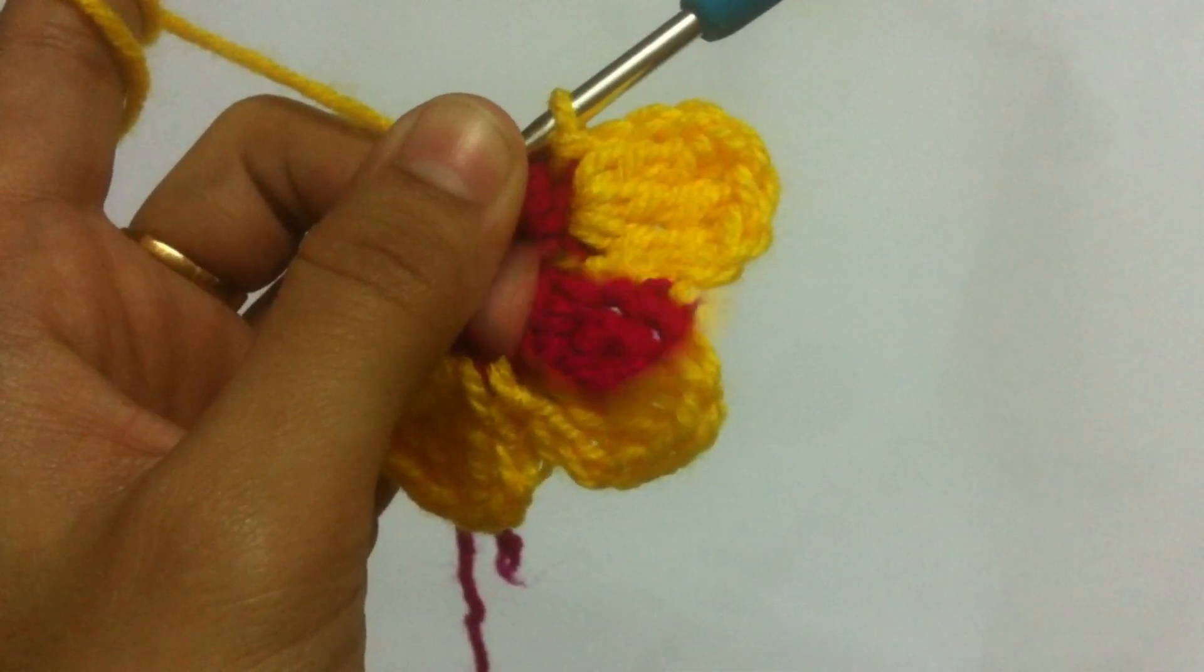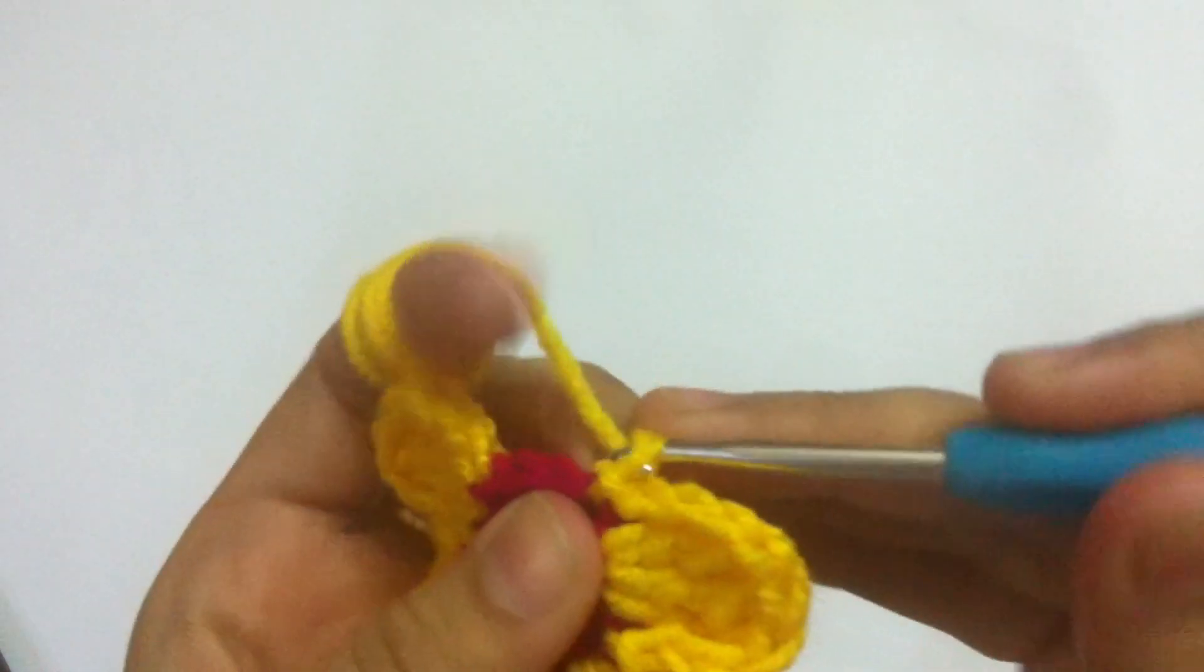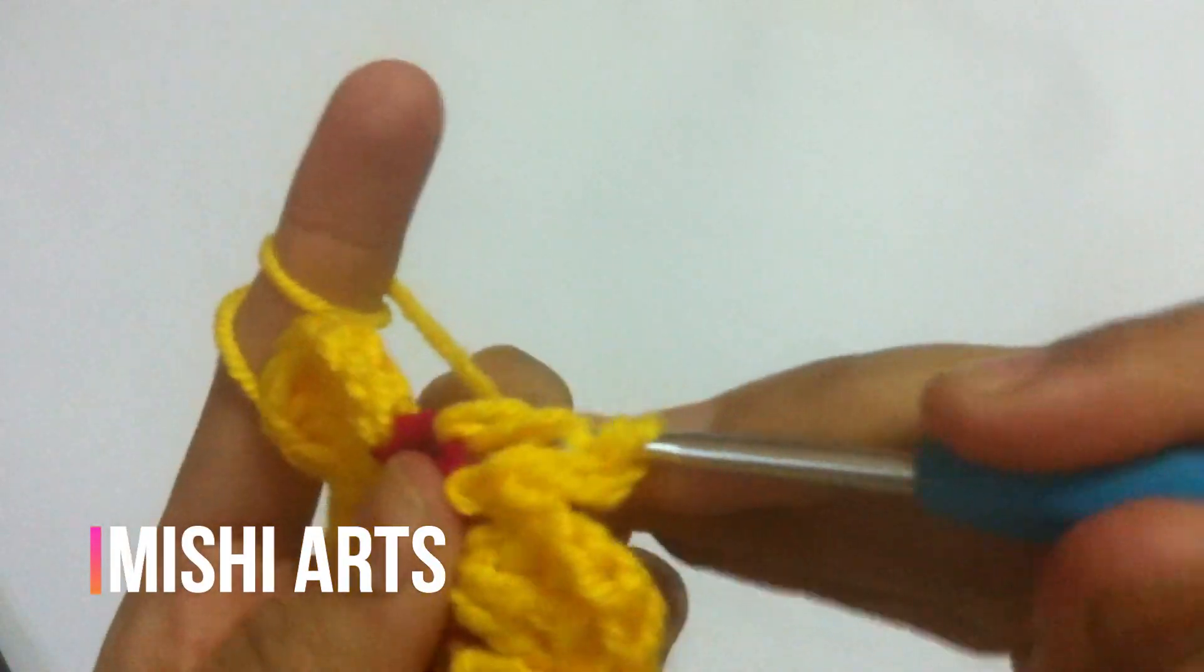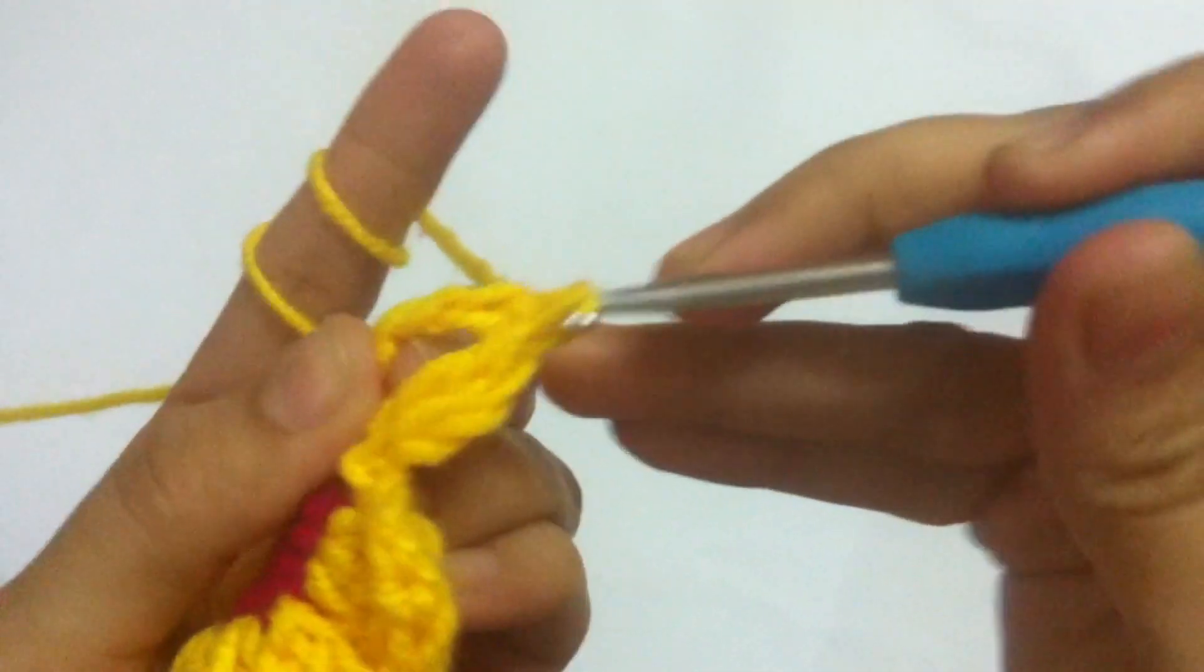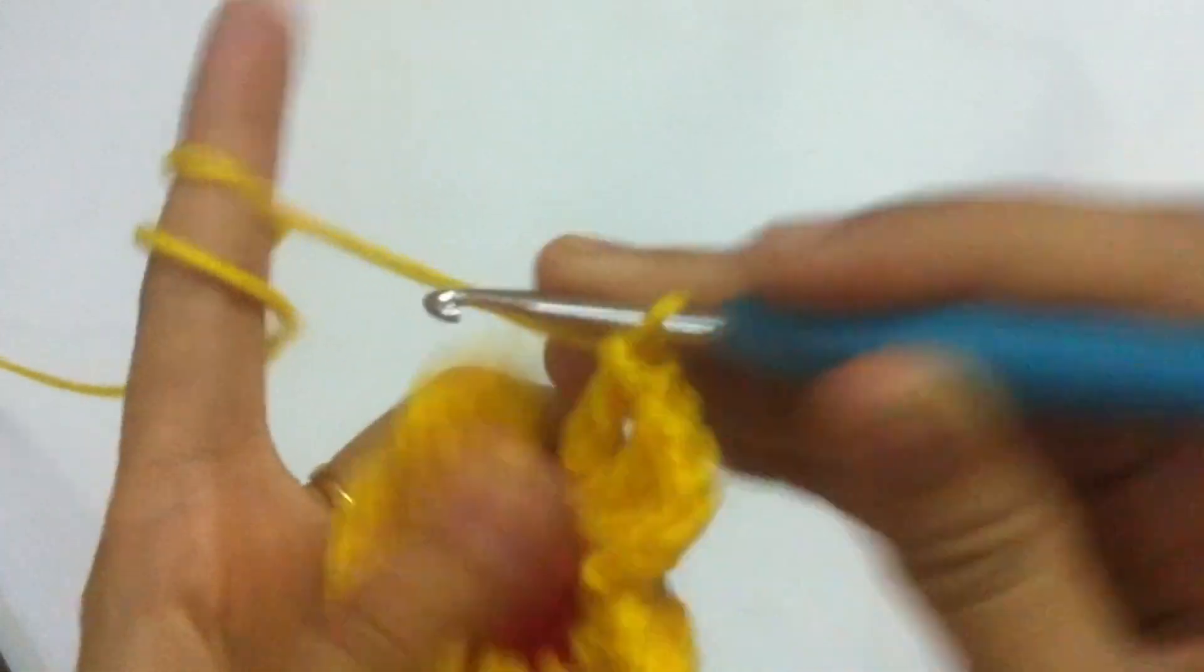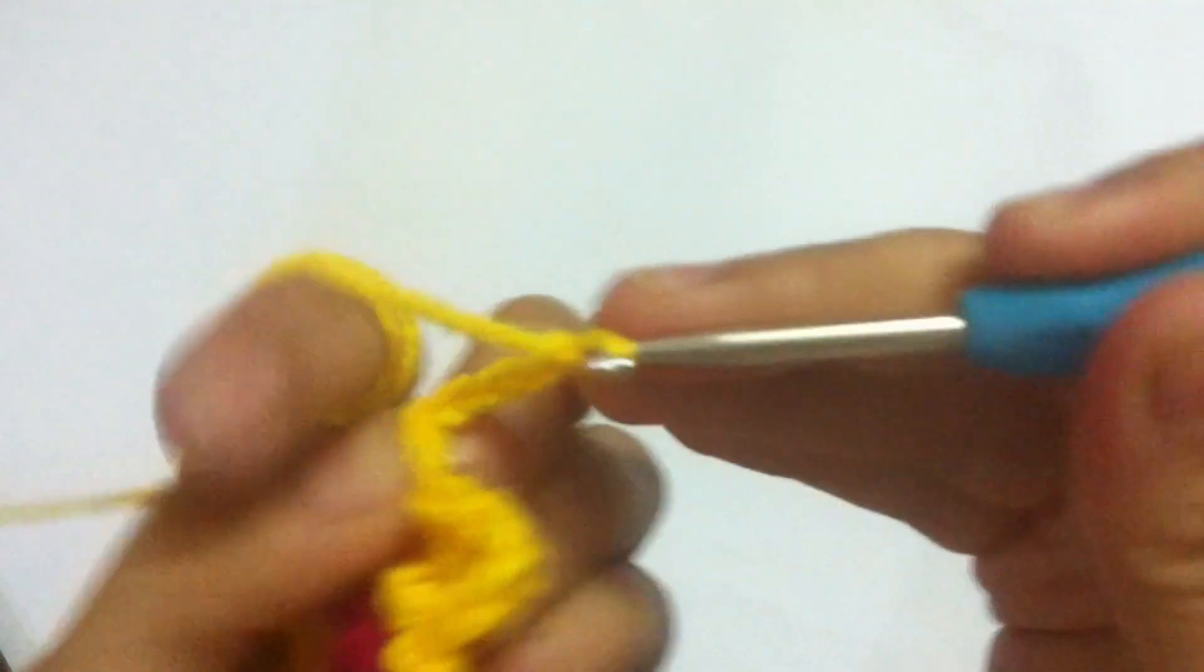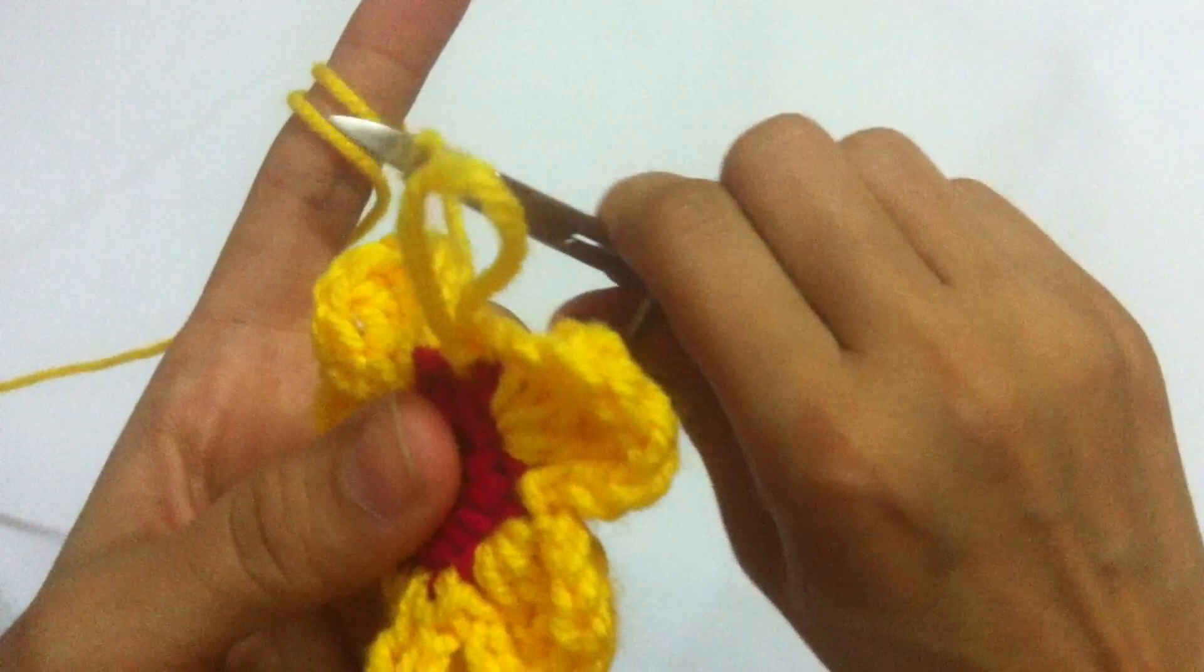Here we are on our very last petal. For the last petal, the same formula will be used. Chain three, yarn over two times, and make three trebles into the very next stitch. Now what we have to do is chain three and slip stitch into our last stitch, and our flower is complete.